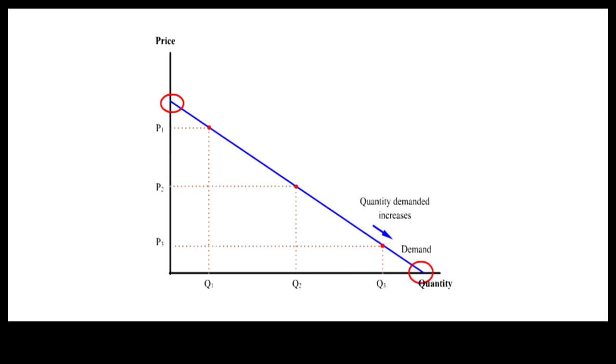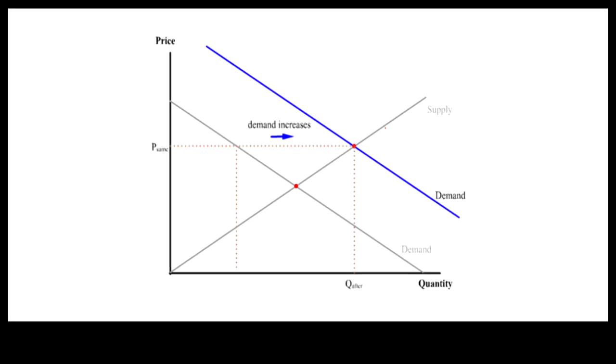In other words, a change in quantity demanded involves moving up or down the same demand curve, while a change in demand involves a shift of the whole demand curve.